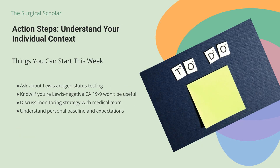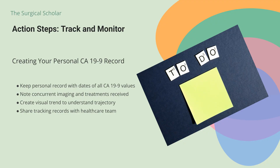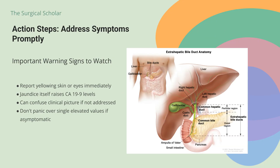If you're having CA-19-9 testing, ask your doctor whether you've been tested for Lewis antigen status. If you're Lewis negative, you and your medical team should know that CA-19-9 won't be useful for monitoring. Keep a personal record of your CA-19-9 levels with dates. Note what imaging was done at the same time and what treatments you were receiving. If you notice yellowing of your skin or eyes, report this immediately — jaundice itself raises CA-19-9 levels, potentially confusing the clinical picture. A single elevated reading, especially if you're asymptomatic, has extremely limited predictive value; serial measurements over time provide much more meaningful information.